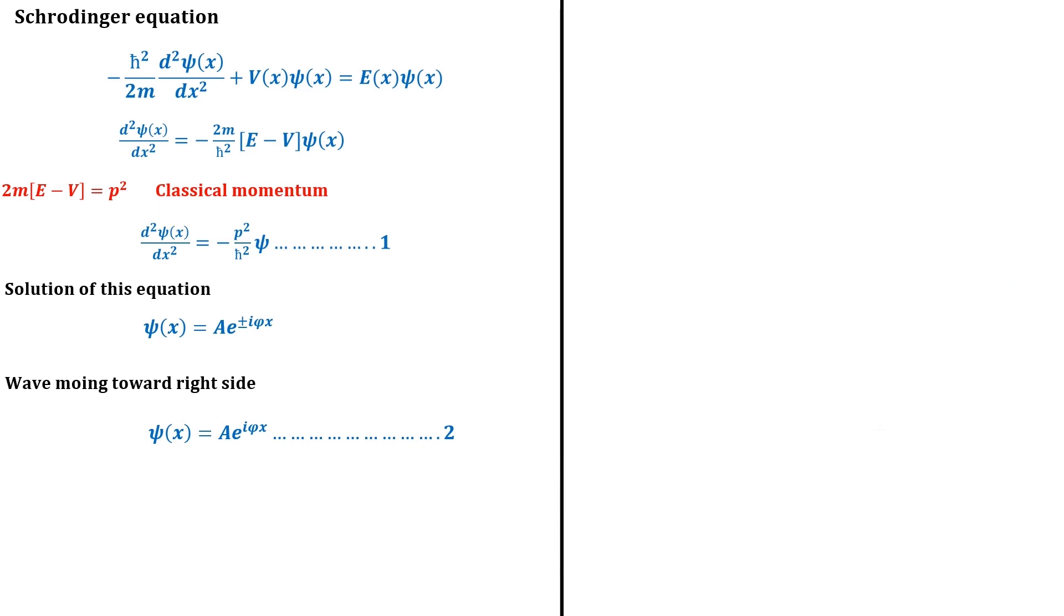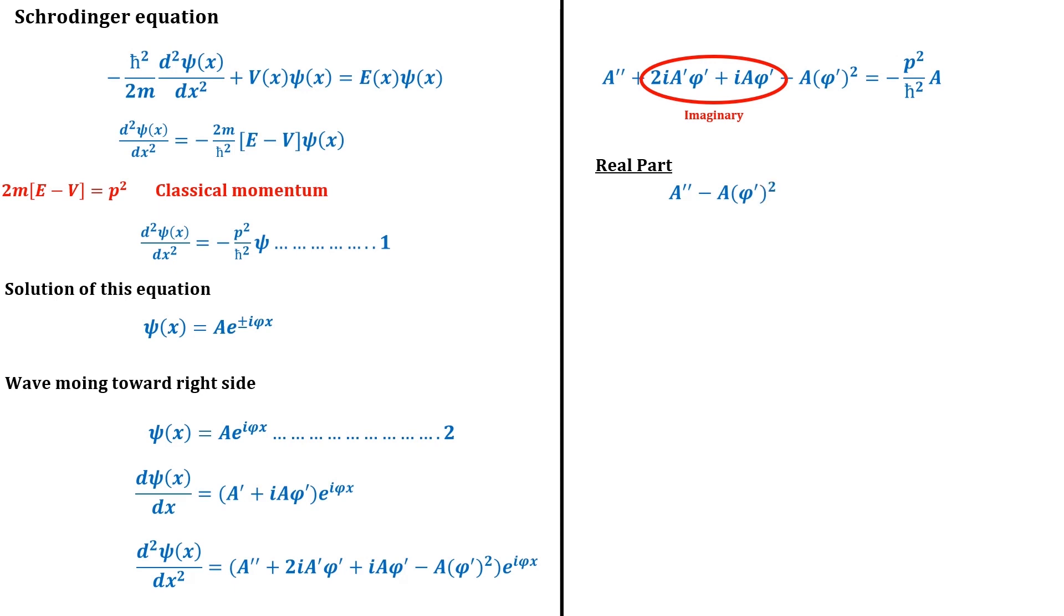Taking the derivative of this solution and putting it back into equation 1, we get this equation. This equation has two parts, one real and the other imaginary. On separating them, the real part: A'' equals A(φ')² minus p²/h̄², and imaginary part equals 0. By further solving this equation, we get the value B upon square root of φ' for amplitude A.